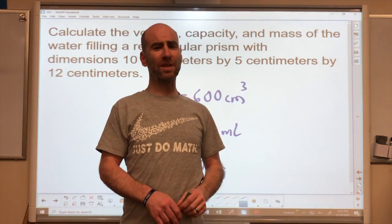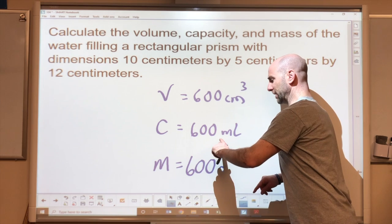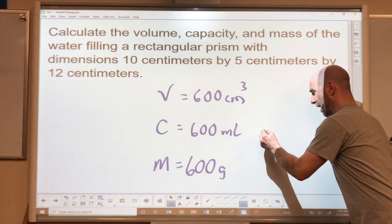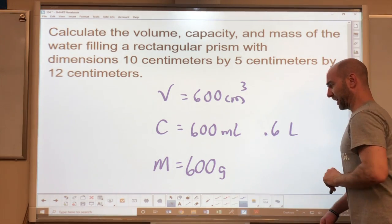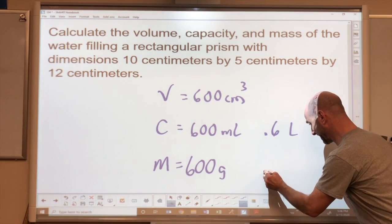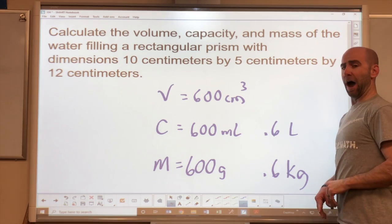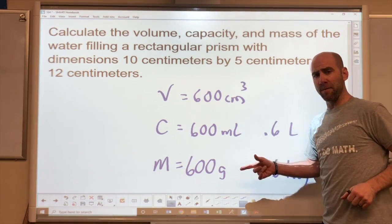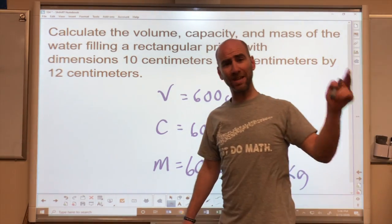Or you can do it like this. 600 milliliters is equal to 0.6 of a liter. And this much water weighs 0.6 of a kilogram. I will accept either way. But know that if this is above a thousand, you have to go to liters every time.